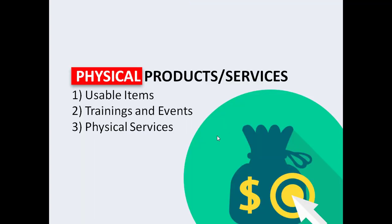Physical products or services include usable items — things like clothing, shoes, bags, and what have you. It can also be trainings and events; probably you want to hold a class on graphic designing or Facebook ads, you can hold a physical training for that, or a physical event or a meetup event. Then you can market it via the digital space.